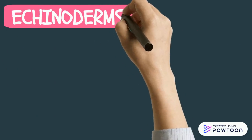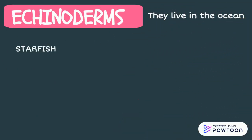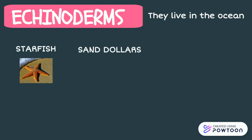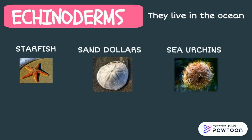Echinoderms. The main characteristic is that they live in the ocean. Echinoderms are starfish, sand dollars, sea urchins, and sea cucumbers.